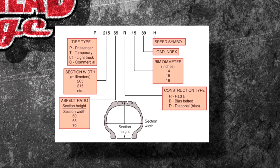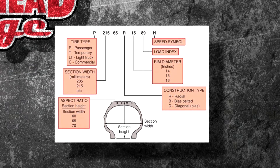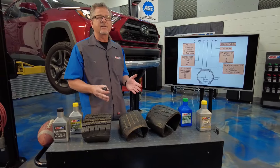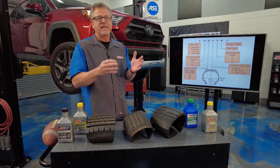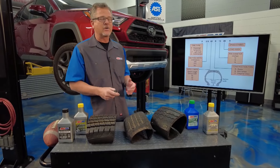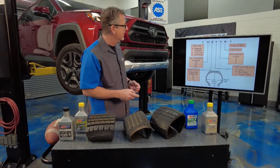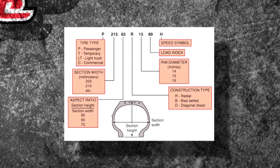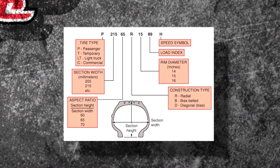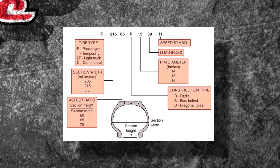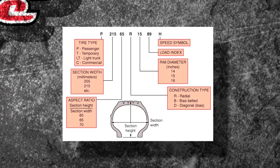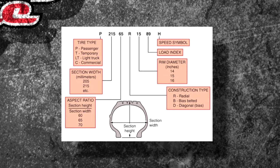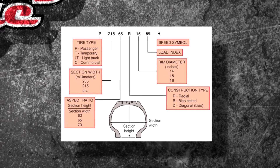To illustrate: if it was a 50 series tire, it would be 50% as tall as it is wide — kind of like a square. Then 'R' is radial construction, '15' is the rim diameter, '89' is the load index, and 'H' is the speed rating symbol.